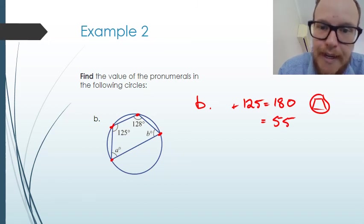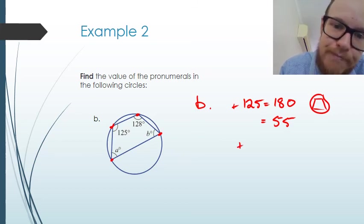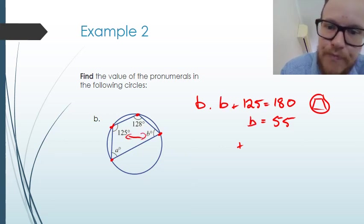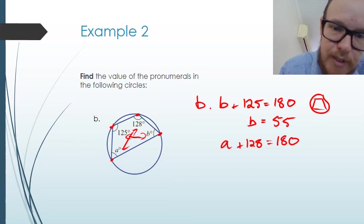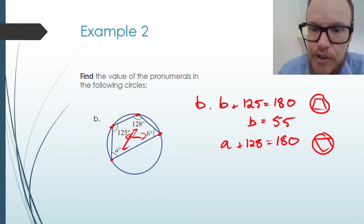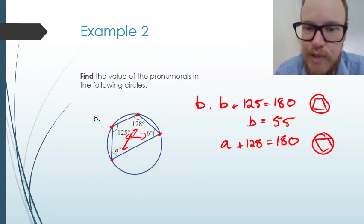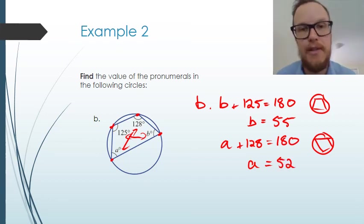For angle B — correcting the setup — B is opposite to the 125, so A plus 128 equals 180 and they are opposite to each other. The coded reason is again the cyclic quadrilateral, so A is going to be equal to 52 for this answer.